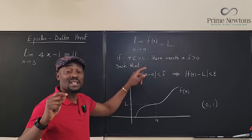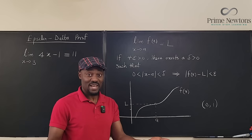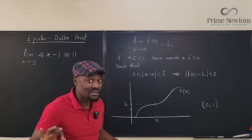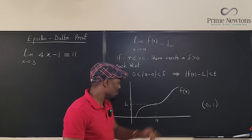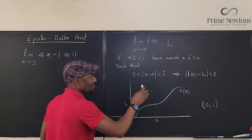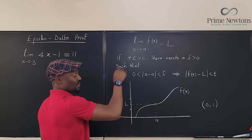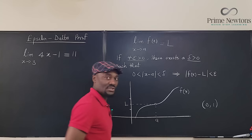Greater than zero means it's a positive number. Remember, distance has to be positive — it's like the length of a table cannot be minus. That's the reason we said greater than zero, and the same thing for delta because we're measuring distances. So for every epsilon greater than zero, there exists a delta greater than zero.